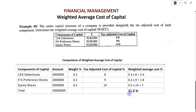11.2% is the weighted average cost of capital for this example. I hope students have understood how to calculate the weighted average cost of capital when the tax adjusted cost of capital is given. Thank you very much. Please subscribe to my YouTube channel, like and share the video, and do not forget to press the bell icon to get the latest notifications.